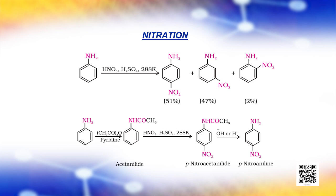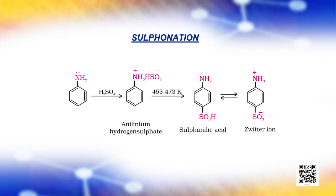The para nitro derivative can be obtained as the major product. Aniline reacts with concentrated sulfuric acid to form anilinium hydrogen sulfate, which on heating with sulfuric acid at 453 to 473 Kelvin produces para-aminobenzene sulfonic acid, commonly known as sulfanilic acid, as the major product. Aniline does not undergo Friedel-Crafts reaction — alkylation as well as acylation — due to salt formation with aluminum chloride, the Lewis acid used as a catalyst.